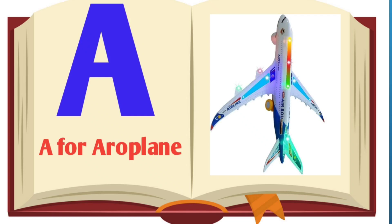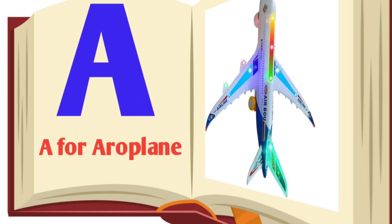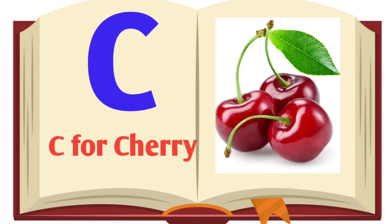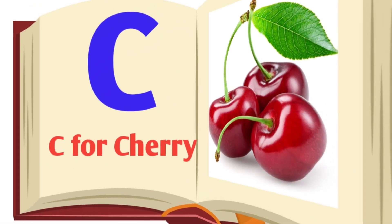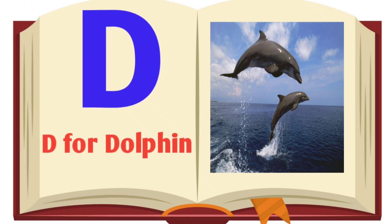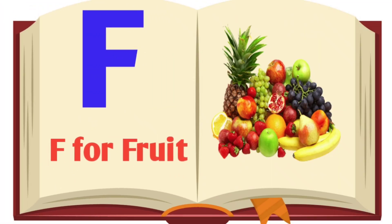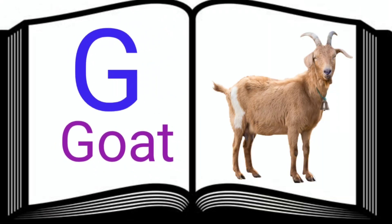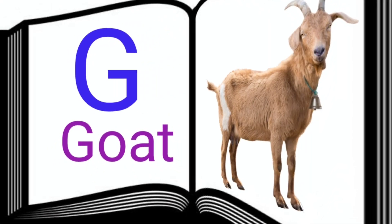A. A for Aeroplane. B. B for Bat. C. C for Cherry. D. D for Dolphin. F. F for Fruit. G. G for Goat.